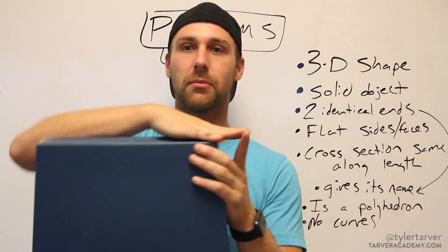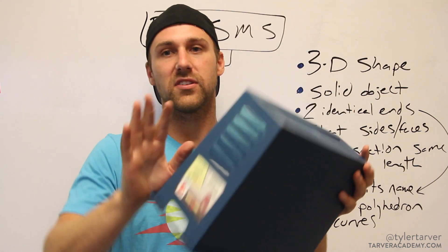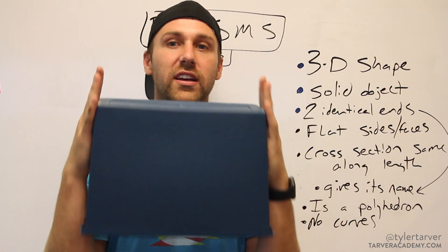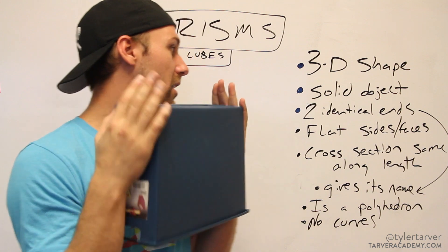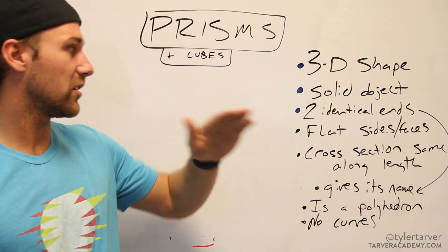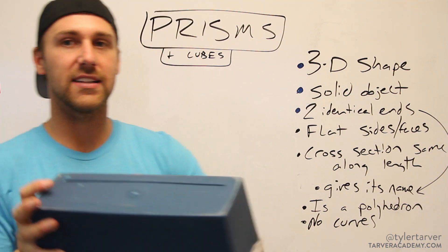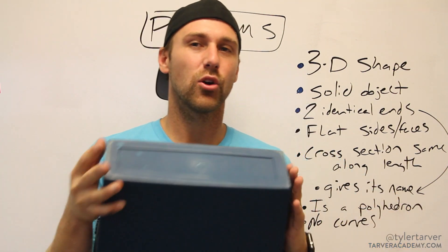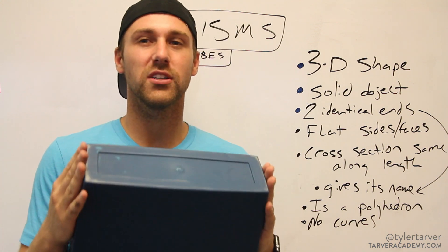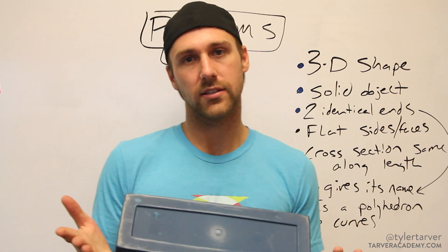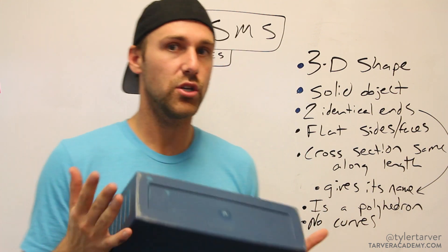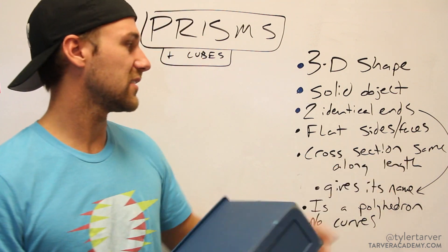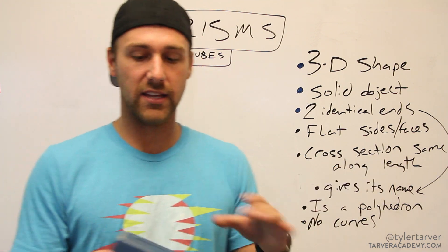There are cross sections of different sizes, but they are all the exact same shape — they're all flat sides with flat faces. Usually your cross sections are going to be rectangles. Cross sections are the same along the length.